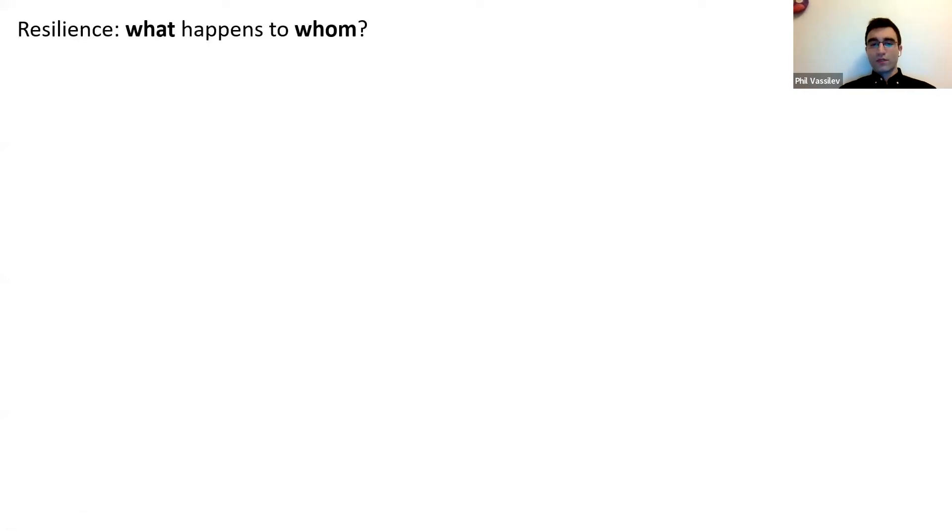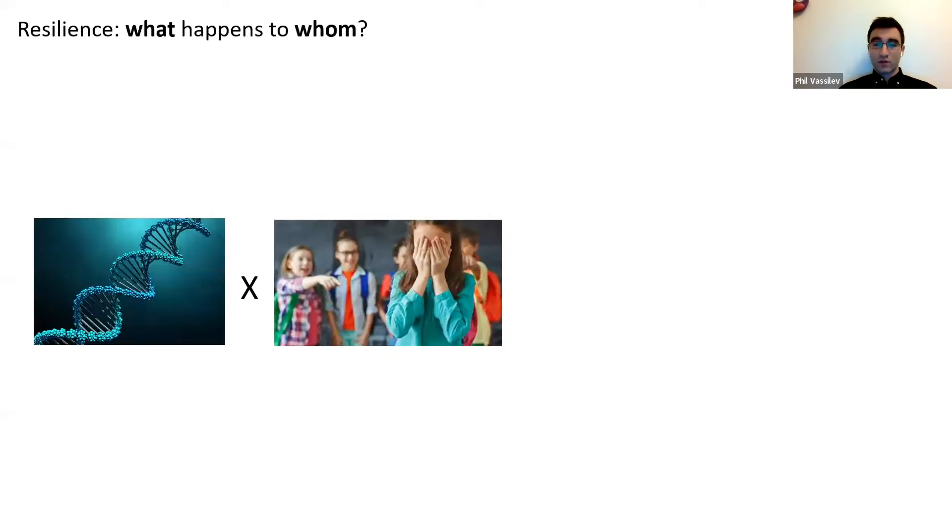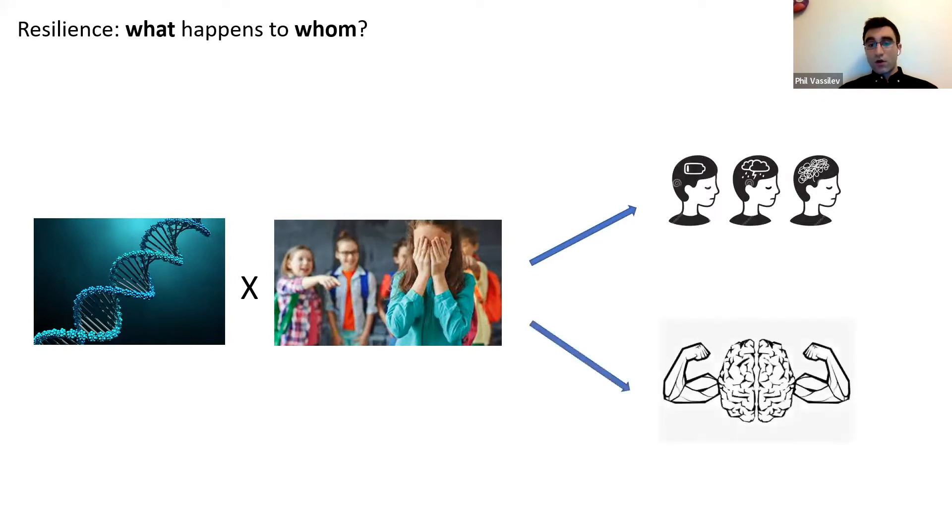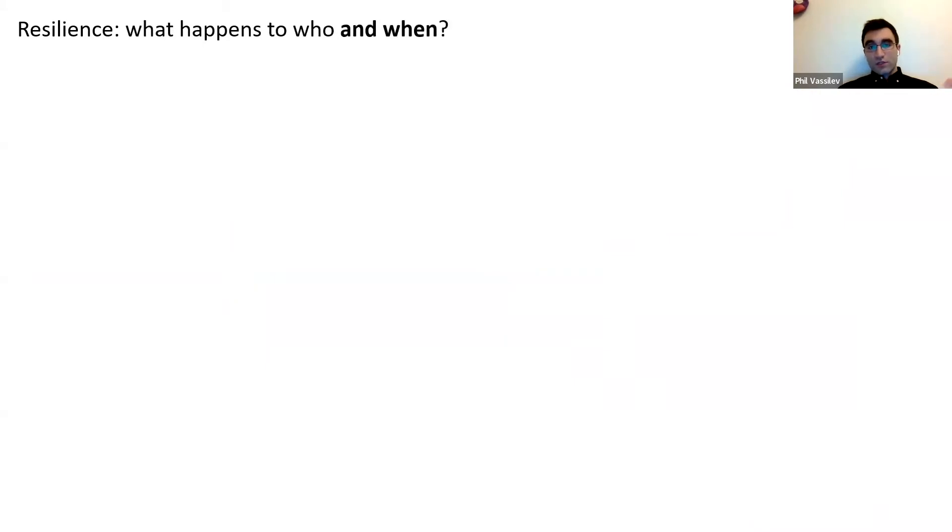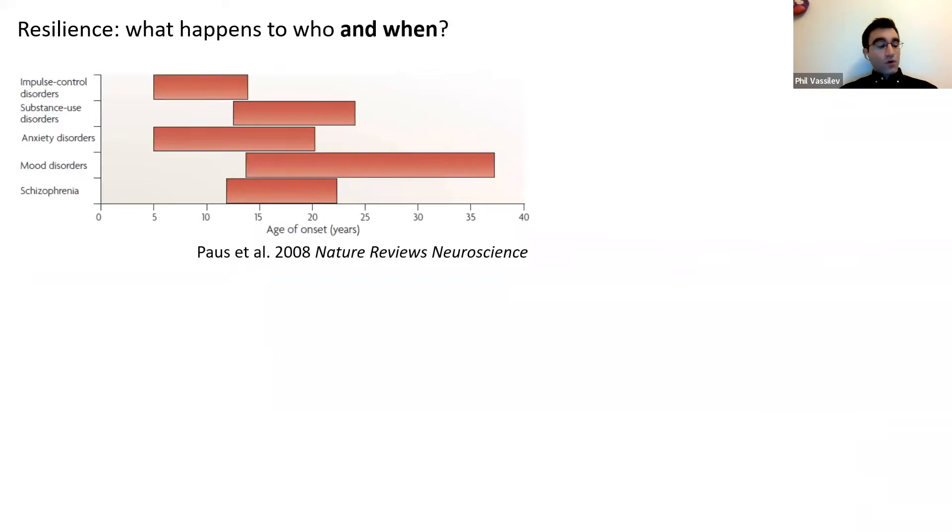We can think of resilience in terms of what happens to whom. This is the idea of gene times environment interaction, that only certain individuals exposed to adverse life events will develop mental disorders while others, despite similar negative experiences, will remain healthy. We can extend this conceptualization of resilience thinking about what happens to who and when, namely speaking about critical periods of development. A lot of mental disorders have their onset during early childhood or specifically the adolescent years.